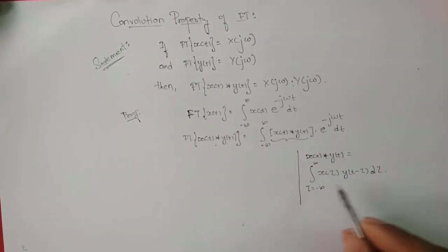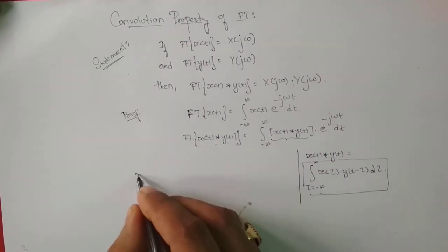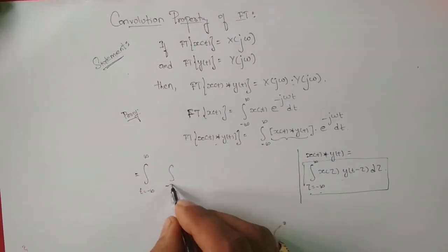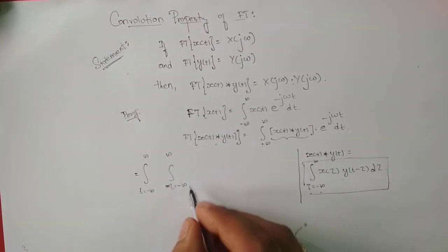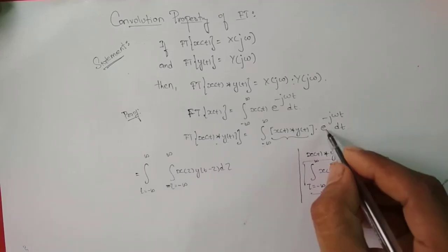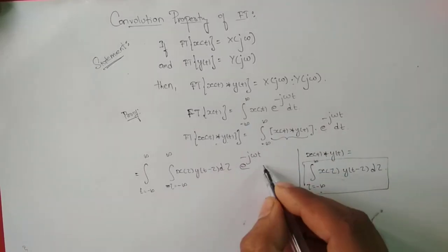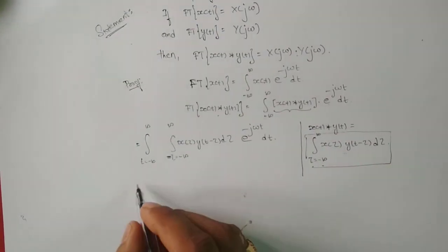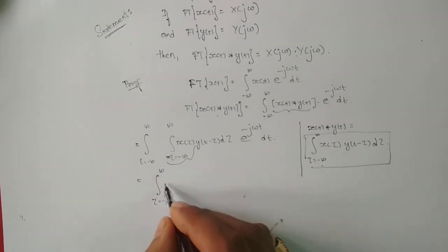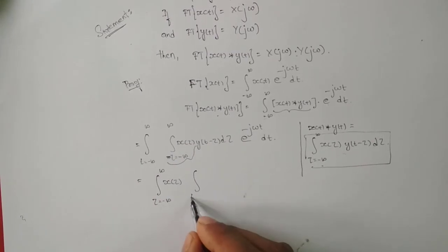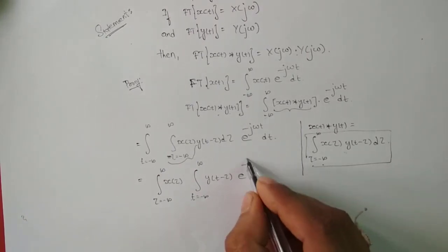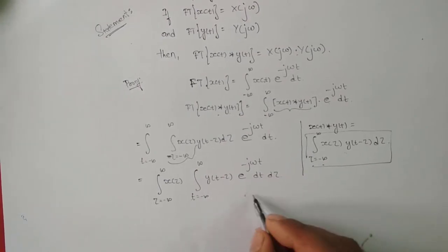What we do here is replace this with the convolution integral. This equals integrating t from minus infinity to infinity, and inside that integrating τ from minus infinity to infinity: x(τ) · y(t − τ) dτ, with the leftover term e to the power minus jωt dt. I will rearrange this integration — I bring the τ integral outside: integrating τ from minus infinity to infinity of x(τ), and the inner integral: integrating t from minus infinity to infinity of y(t − τ) · e to the power minus jωt dt dτ.